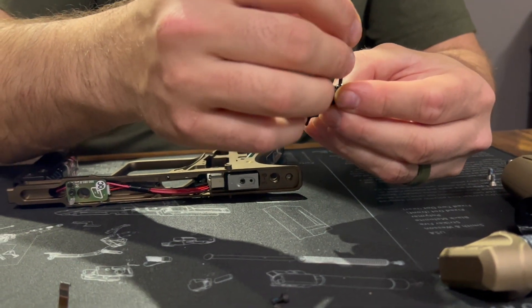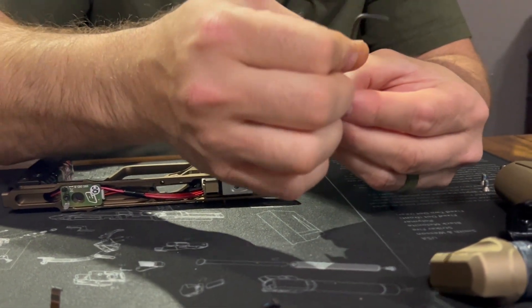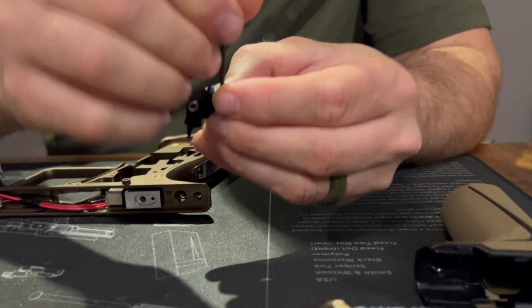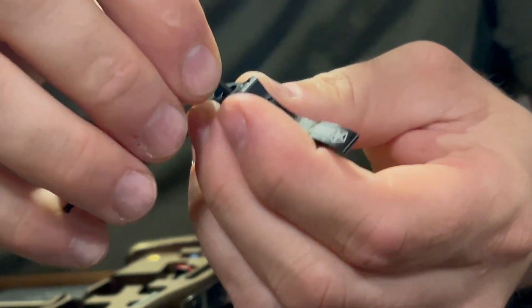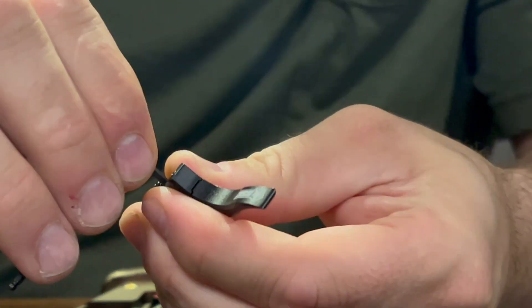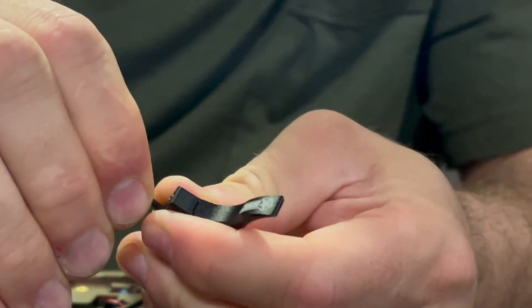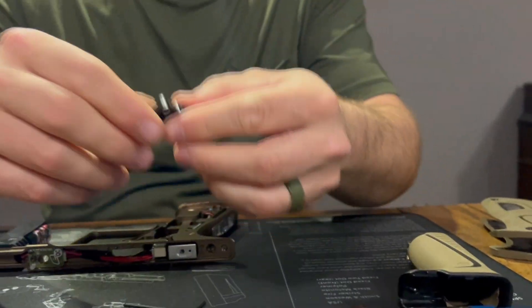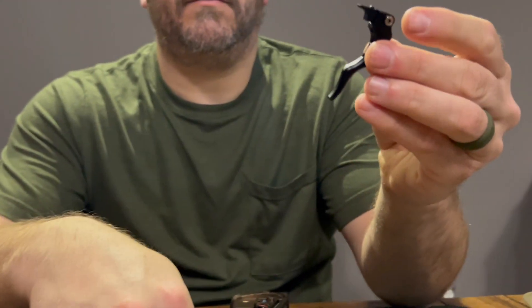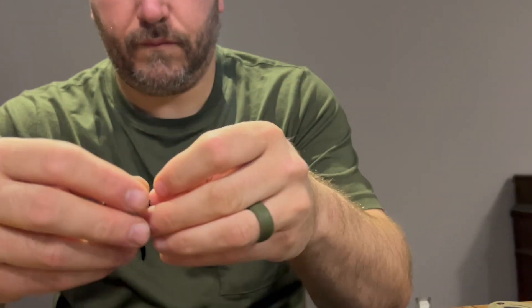You're going to put your trigger on there, and then you're going to tighten it back up. Once you get it, just give it a little snug. You don't want it to come loose. And that is the new trigger on the shoe.